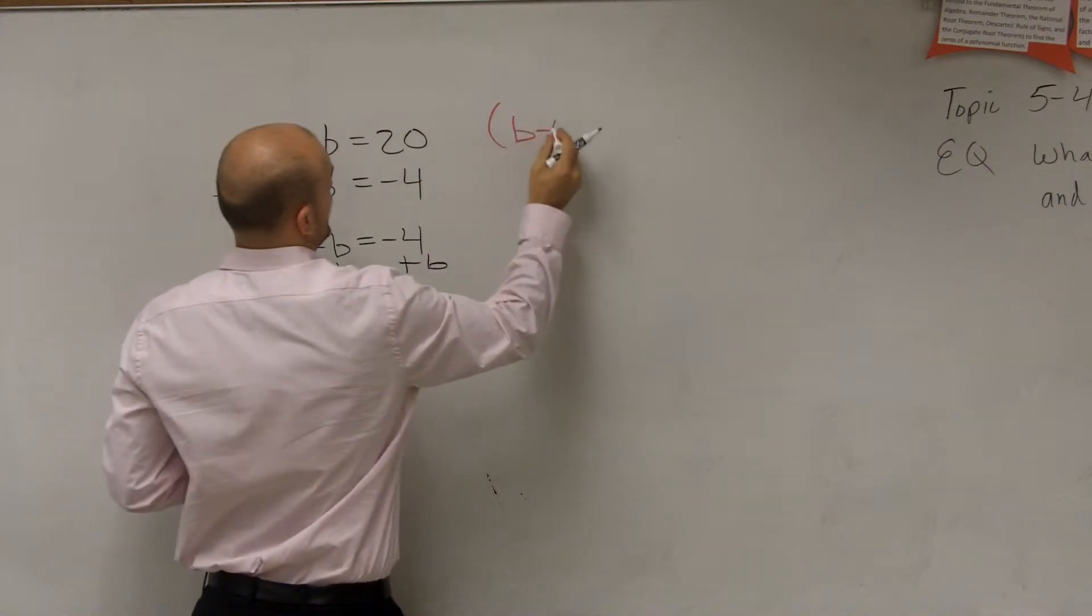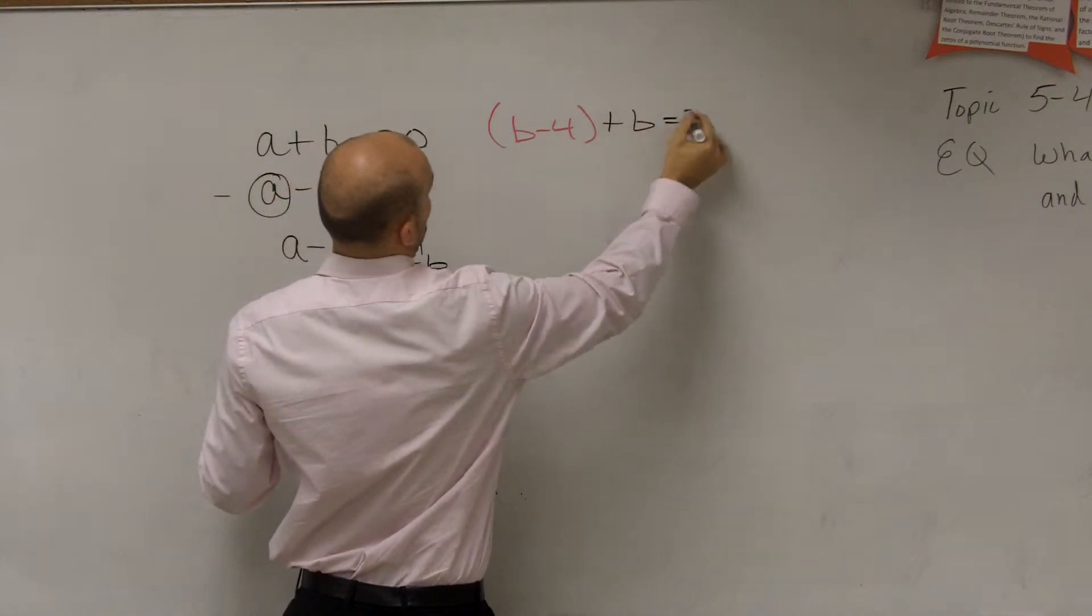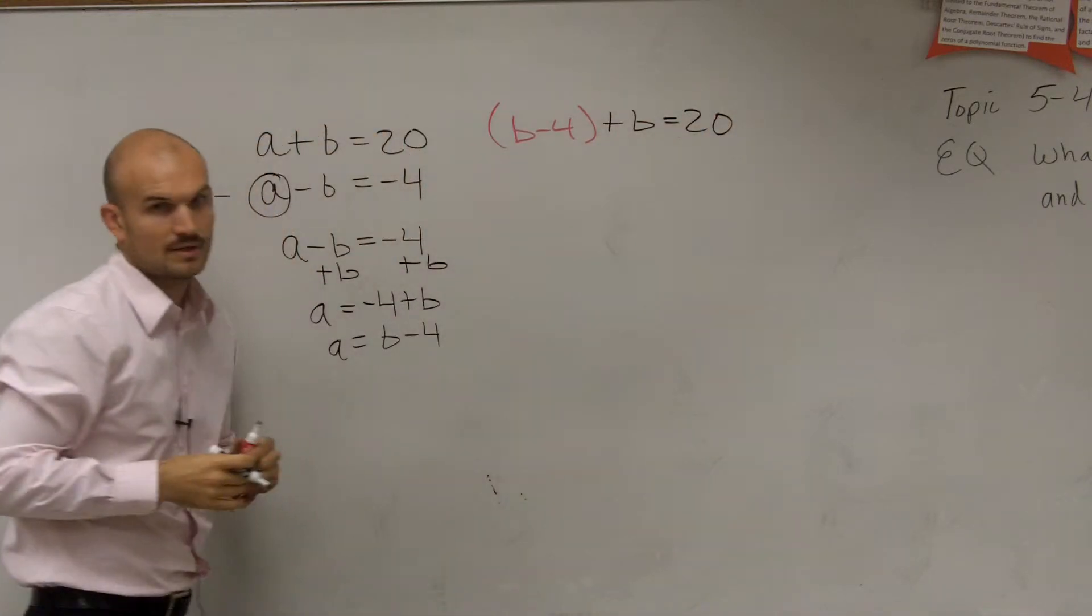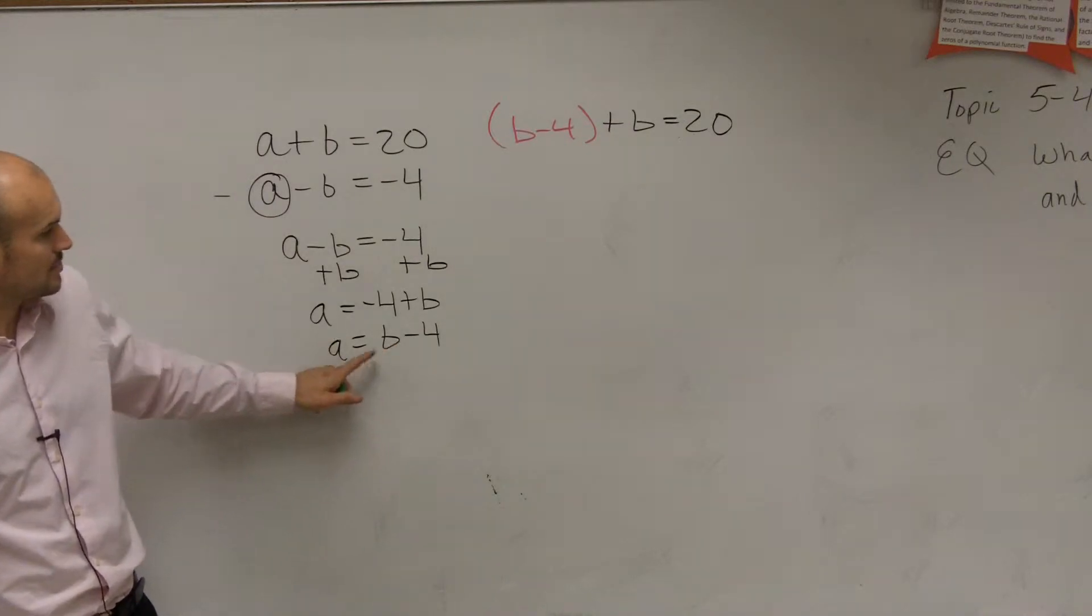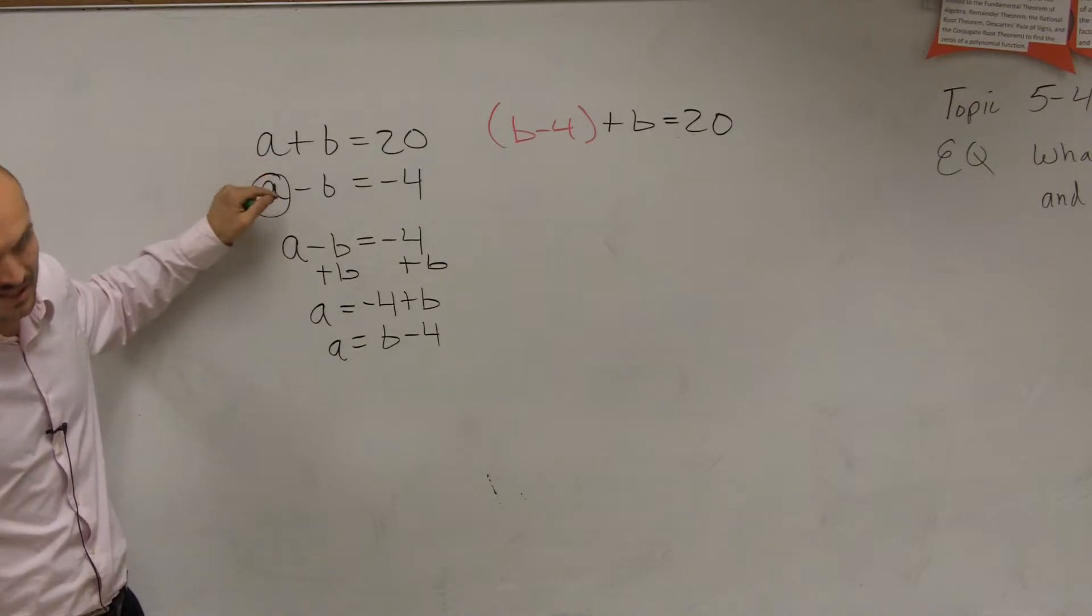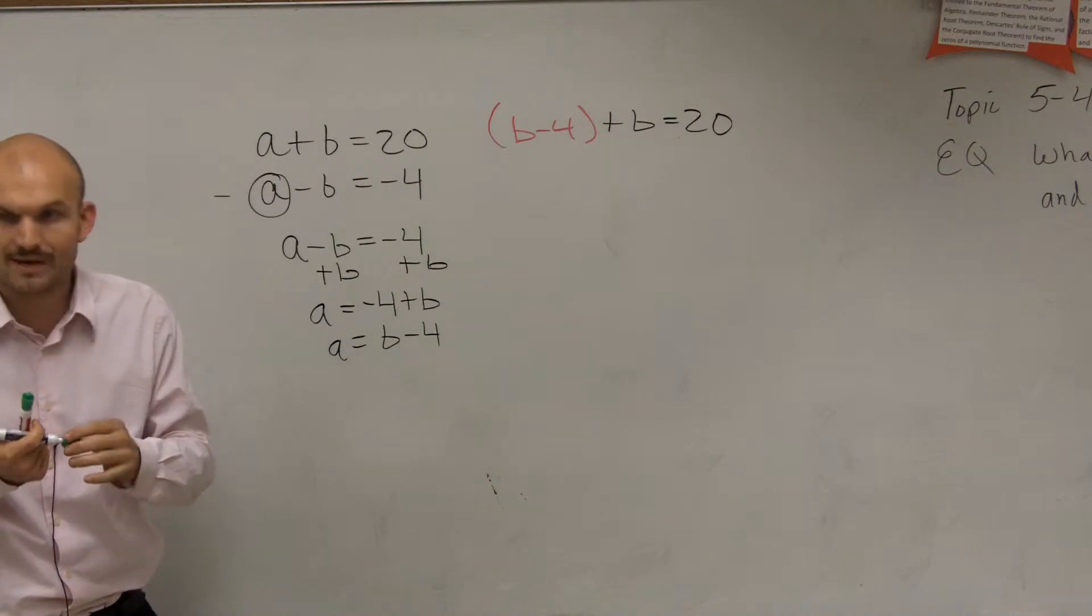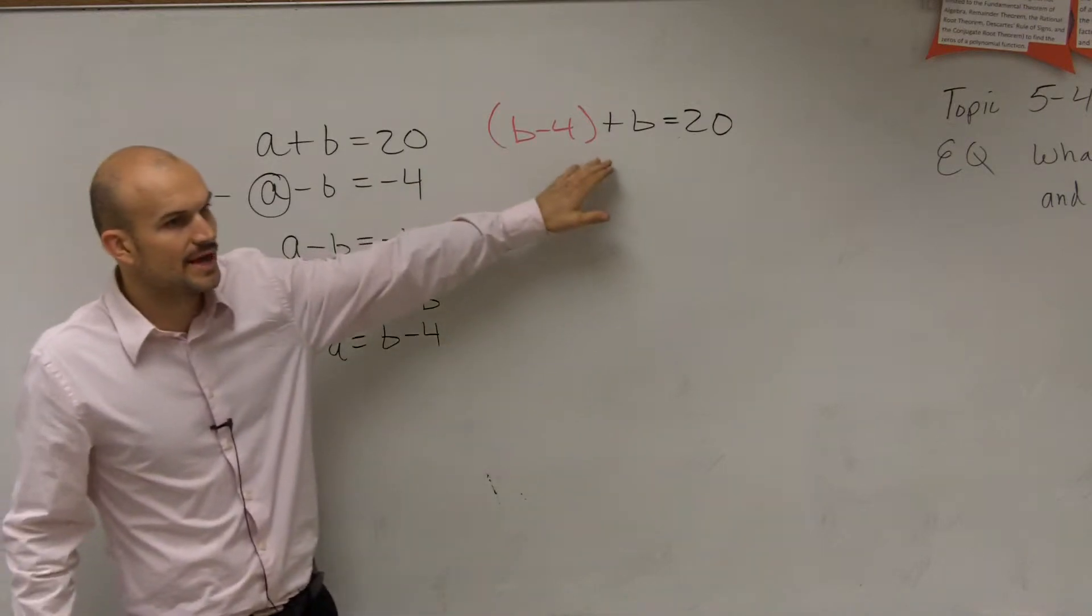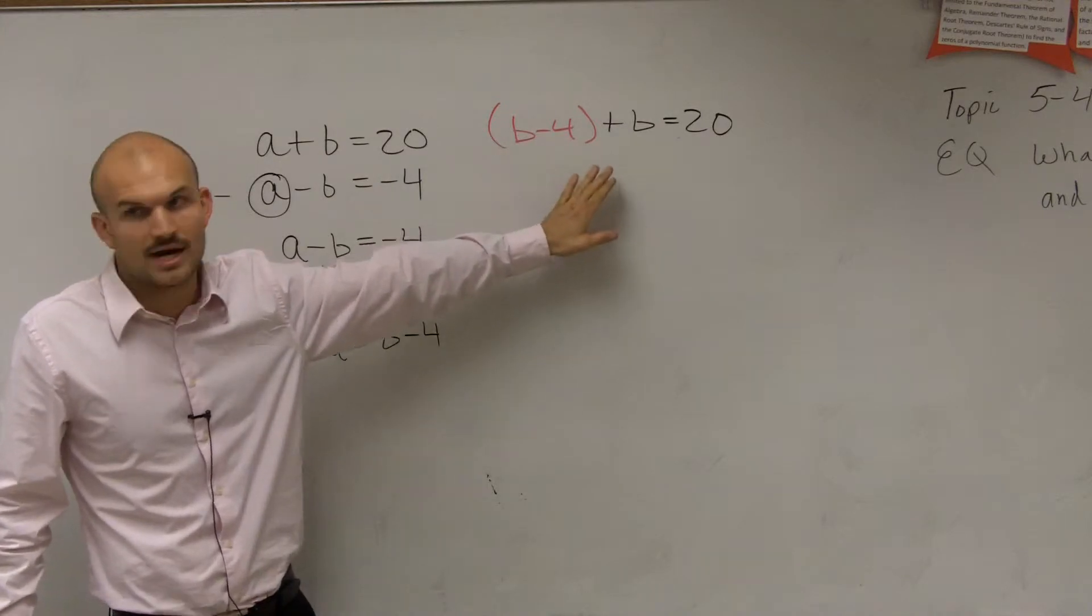So it looks like this: b minus 4 plus b equals 20. So what I did is I took the value of a, which was b minus 4, and rather than writing a, I wrote b minus 4. Now why would I do such a thing? The reason why I would do that is because when I do that, I eliminated the a, right? When you look at this equation now, there is no more a.